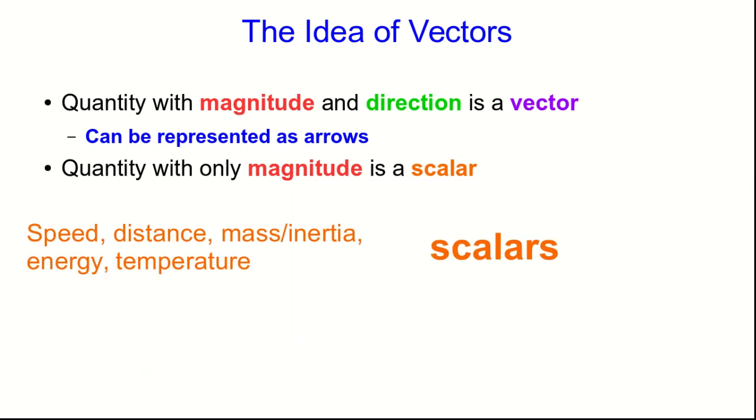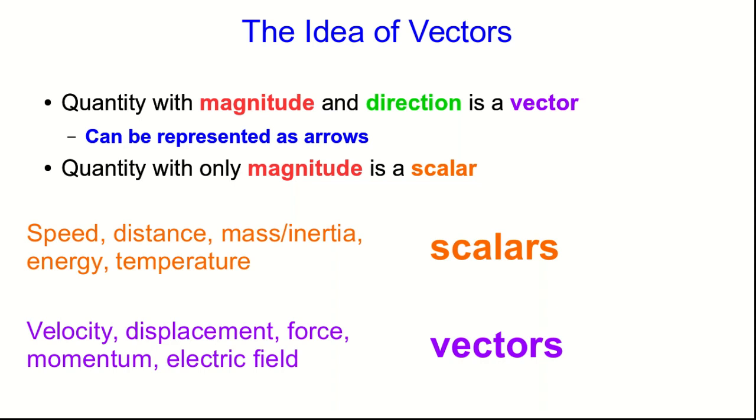We're going to meet lots of quantities that are both scalars and vectors, and you've probably met most of them in other courses before. Speed, distance, mass or inertia, energy, and temperature are all scalars. On the other hand, velocity, displacement, force, momentum, and electric field are all examples of vectors.